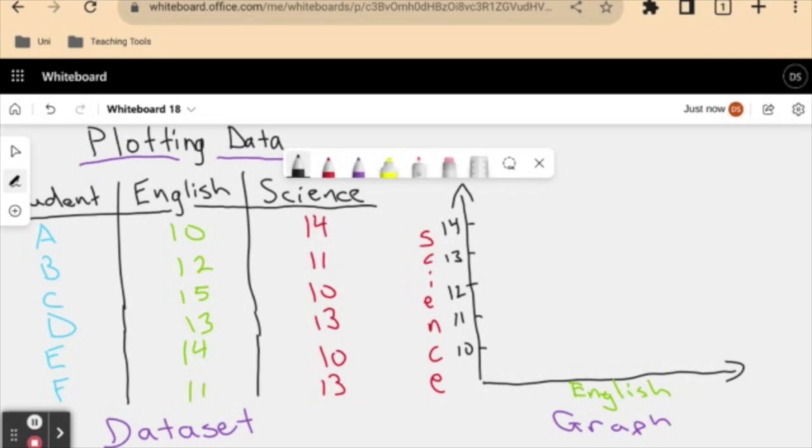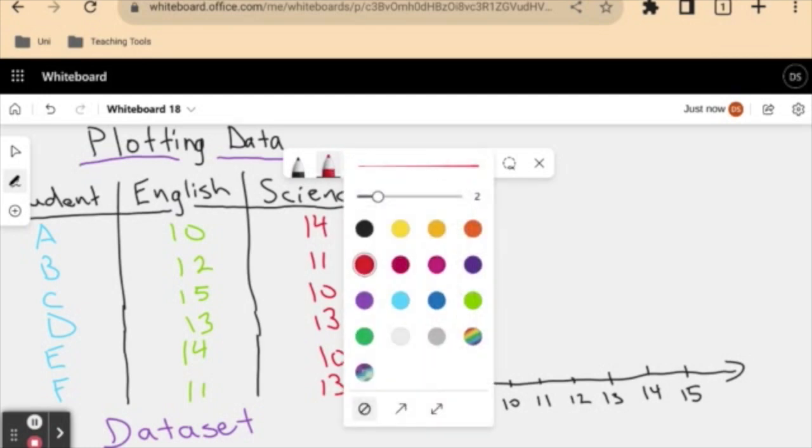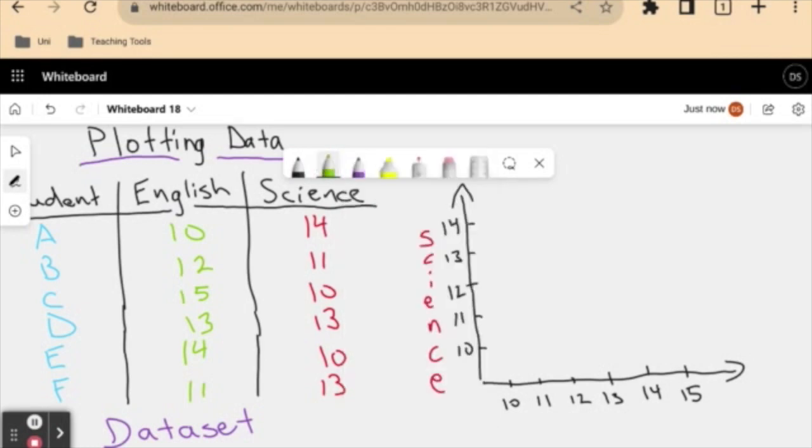And for English we are going to have, let me move some of this down a little bit. Let me just put in these little markings. So I have 10, 11, 12, 13, 14, and 15. And once again, just to write it here, so we have a nice visual display of all of our elements. We have our English marks along this axis.